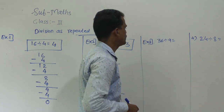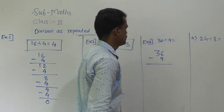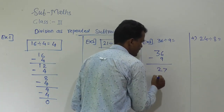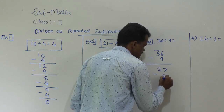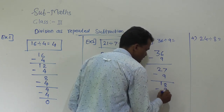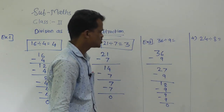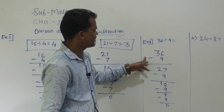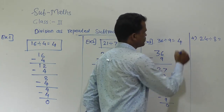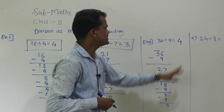Then 36 divided by 9. Write the dividend and subtract 9. 36 minus 9 is 27 — use backward counting. Then again minus 9: 27 minus 9 is 18. Then 18 minus 9 is 9, then 9 minus 9 is 0. Count how many times we subtracted 9: 1, 2, 3, 4 times. Cross-check: 9 fours are 36 — our answer is correct.